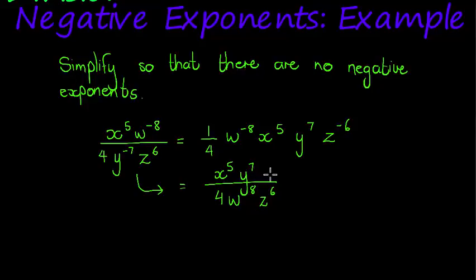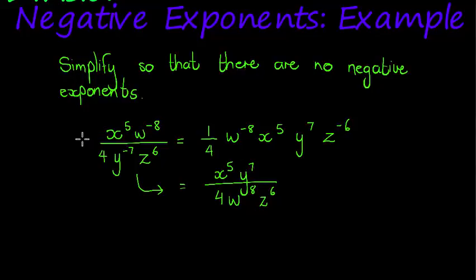That is one way of doing it, but again this you can only do if you don't have pluses and minuses — in other words, you don't have more than one term either in the numerator or in the denominator.